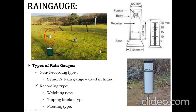In India, non-recording type of rain gauges are commonly used and Simon's rain gauge is the most preferred one. Coming to recording type of rain gauges, we have weighing type, tipping bucket type, and floating type of rain gauges.